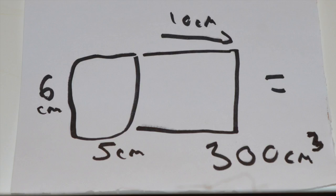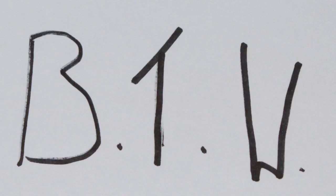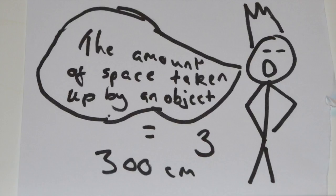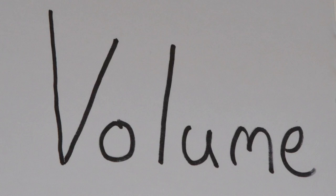So there you have it. This shape is 300 centimeters cubed. By the way, actually, our number here is the amount of space taken up by an object, or to put it simply, the volume.